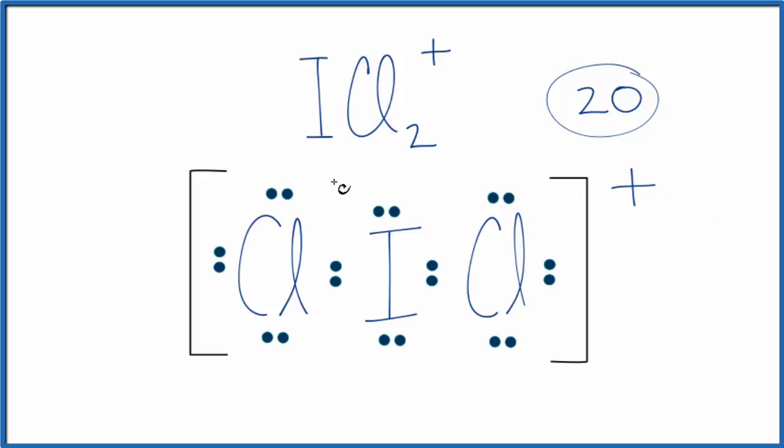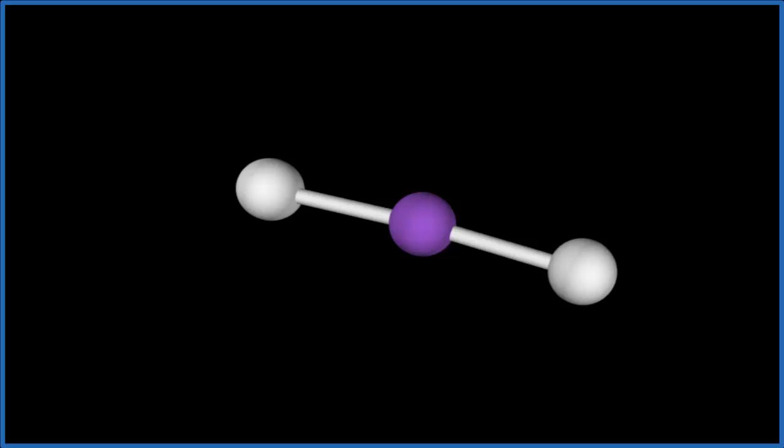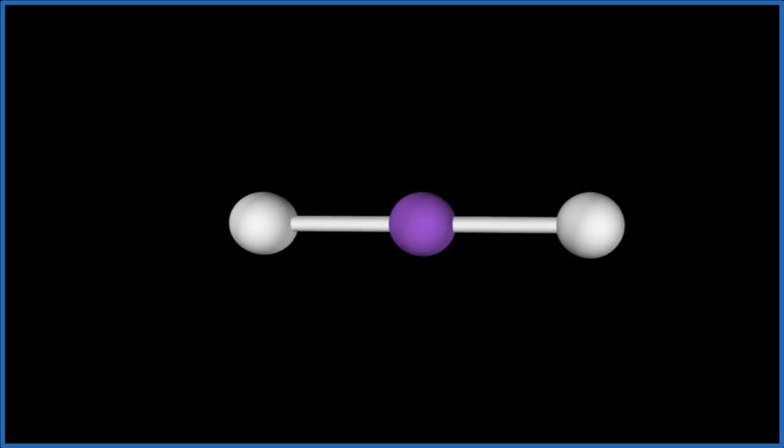Let's look at the molecular geometry briefly. We have 2 atoms here and 2 lone pairs. The purple represents our central iodine atom. Let's add the 2 chlorine atoms. They spread out and push away, and then we have those 2 lone pairs.